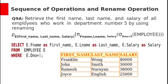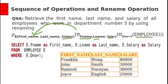Suppose if we want to rename the columns: retrieve the first name, last name, and salary of all employees who work in department number 5, by using renaming. For renaming, rho will be used. Here we want to rename fname, lname, and salary to first_name, last_name, and salary. If we also want to rename the relation employee with e, we can add that as well.